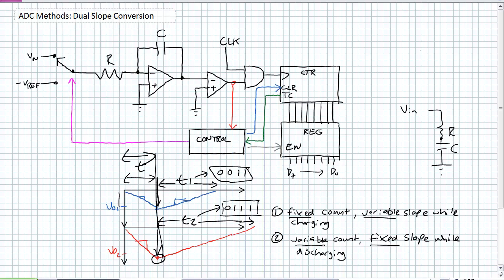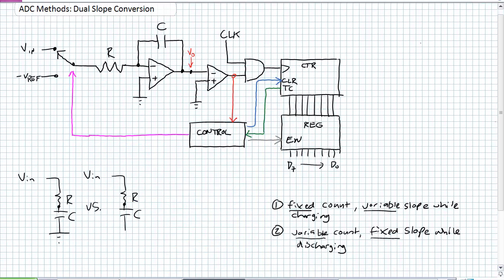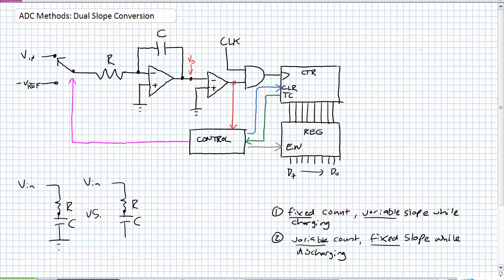That is the dual slope behind the dual slope conversion method. First stage: fixed count, but variable slope proportional to the voltage you are sampling at that input moment. Second stage: it's a variable count with a fixed slope while it discharges. Let's go into the internal workings starting with a case where the capacitor is fully discharged, the input voltage is connected, the switch switches over to the input voltage, and the output of the integrator is 0. Before we go further, you have to understand the difference between a resistive-capacitive charging network with a grounded capacitor versus one without that ground — the differences are subtle but important.